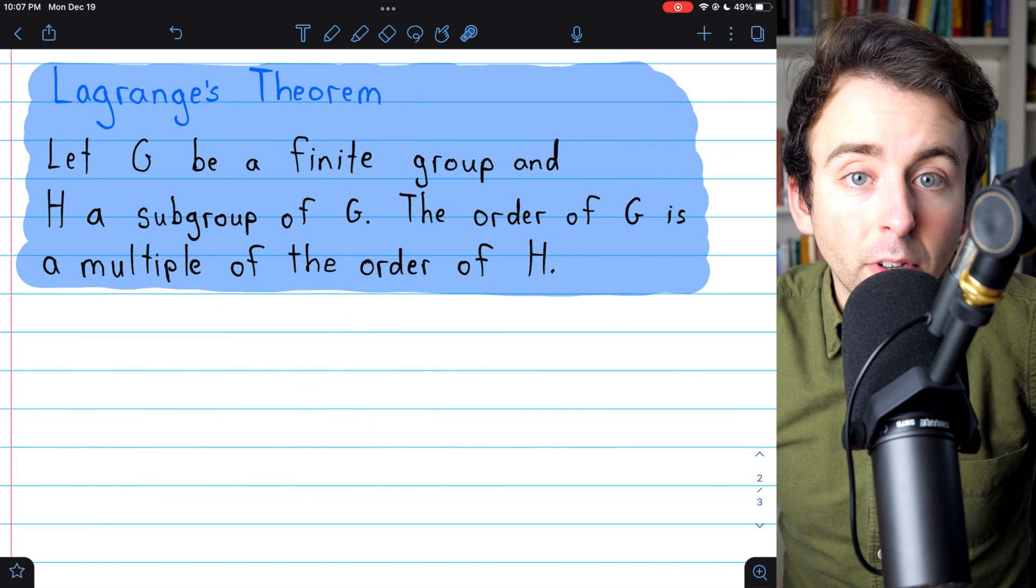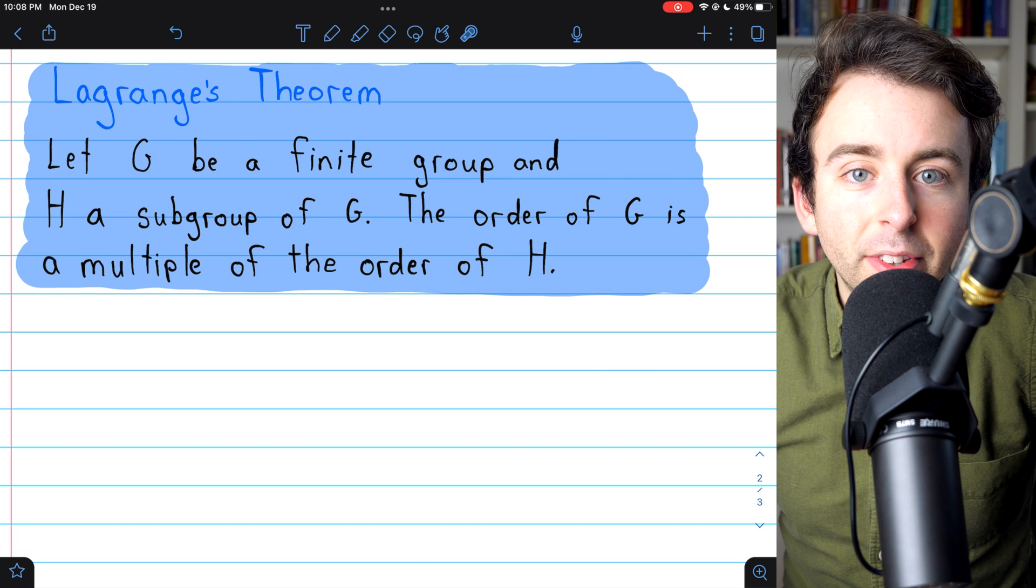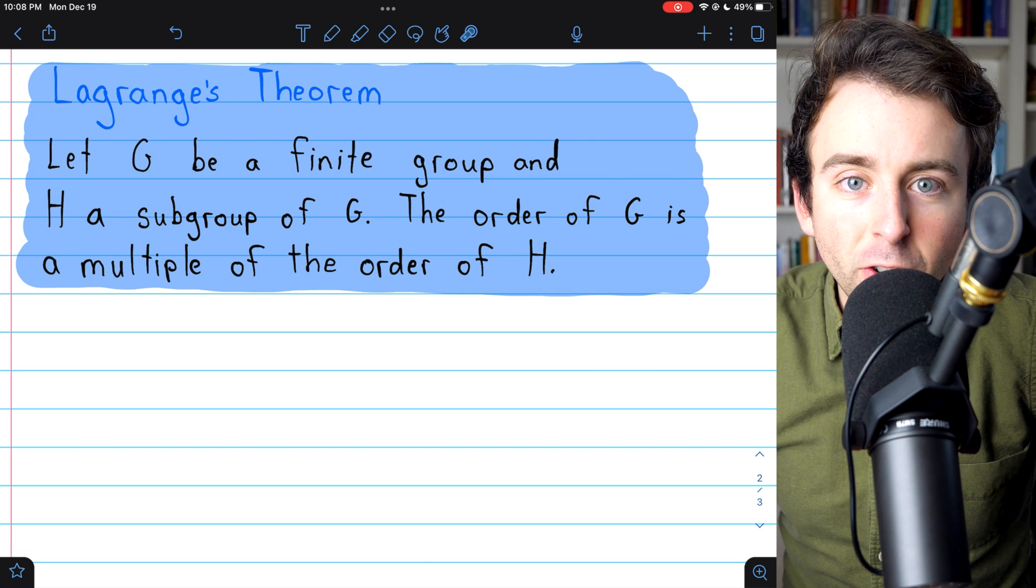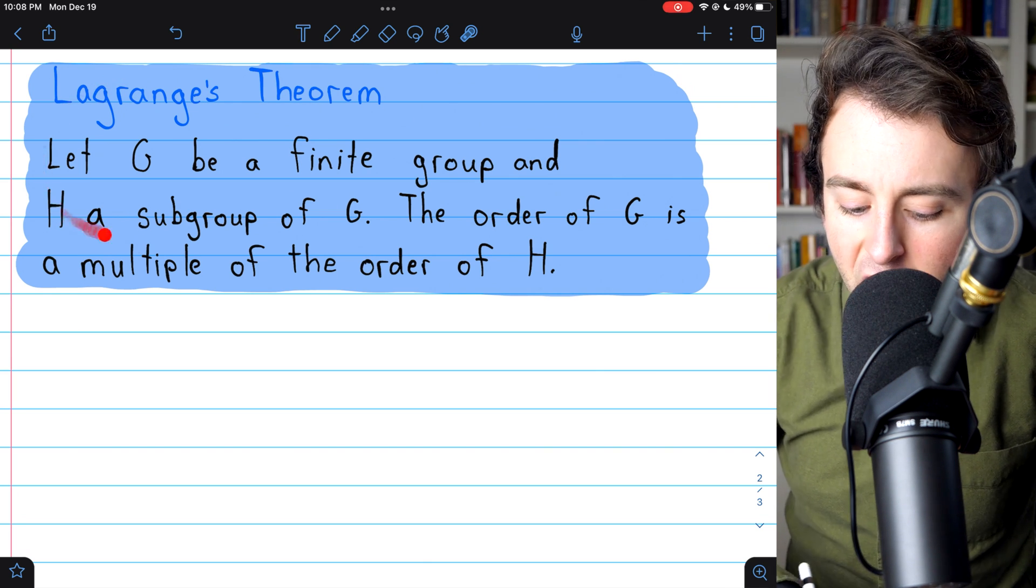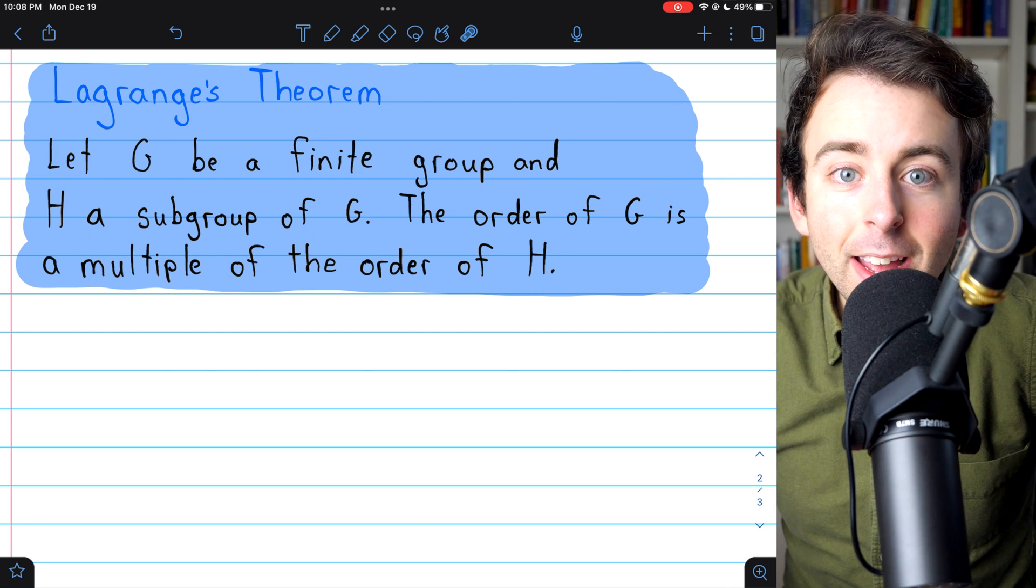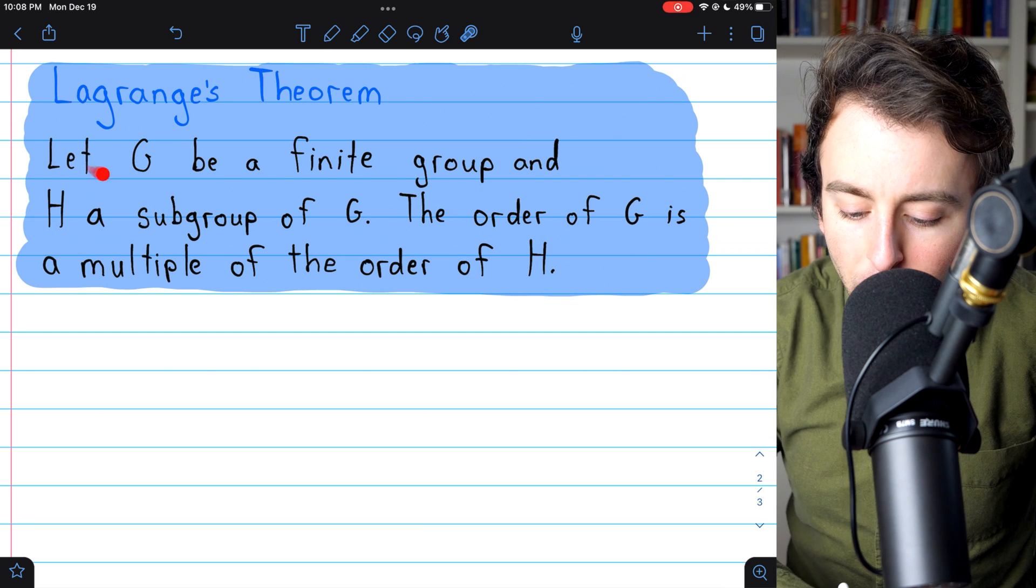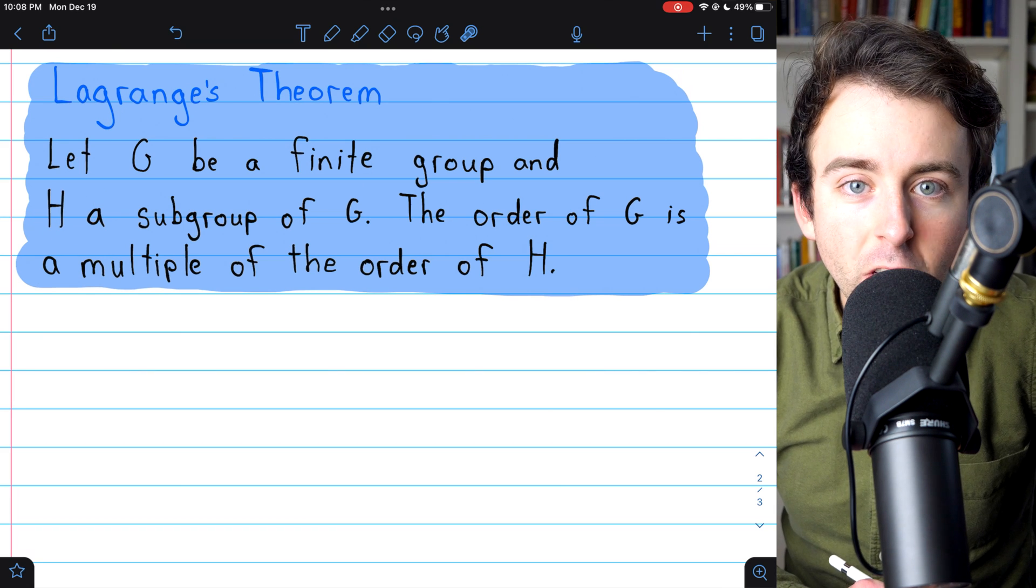This result, along with the results we've previously proven about cosets, establish Lagrange's theorem, a really important theorem in abstract algebra. It states that for a finite group G and a subgroup H of G,